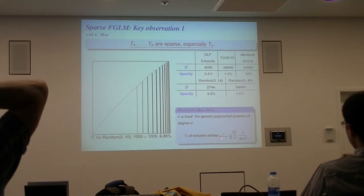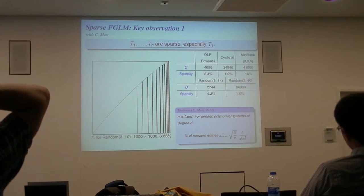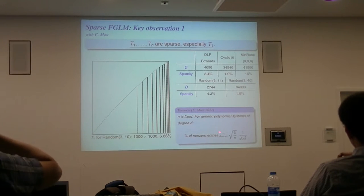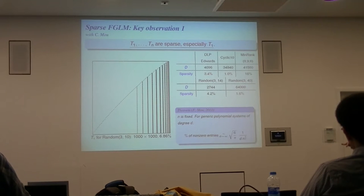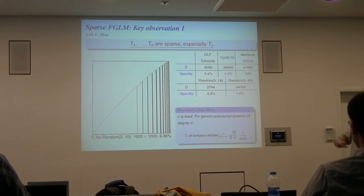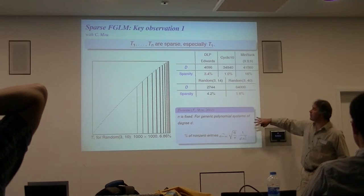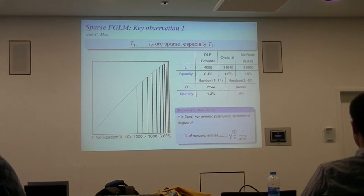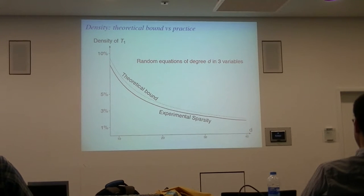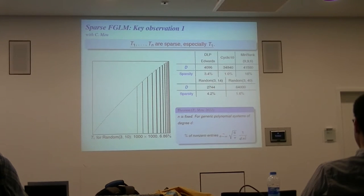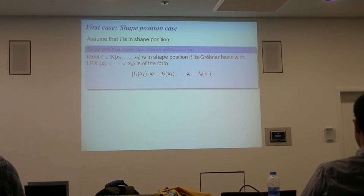More recently, we were able to prove that for a generic system, under some algebraic assumptions, the density of these matrices is given by an explicit formula. You see that when you increase the degree of the input equations or the number of variables, the sparsity tends to zero. Of course this is true only for generic polynomials — it does not mean it is true for a particular application. This theoretical bound is almost exact: comparing the theoretical bound with asymptotic and with what we obtain in practice, it is almost matching. So we understand very well what happens.